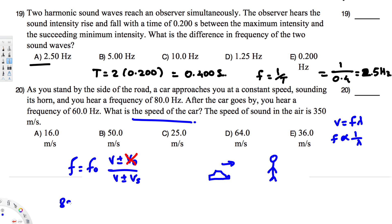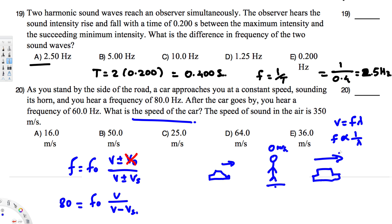The first equation is: 80 Hz = f₀ × v / (v − v_source). For the second situation, after the car goes by, the observer still has zero velocity but the car is now moving away. As the car moves away, the wavelength increases, so frequency decreases. To decrease the frequency, we need a larger denominator, so we use a plus sign: 60 Hz = f₀ × v / (v + v_source).